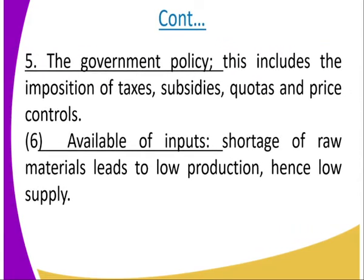Number five is government policy. This includes the imposition of taxes, subsidies, quotas, and price controls. When taxes are imposed on a commodity, it results in pricing being high, thus reducing the quantity taken to the market. Subsidies occur when the government subsidizes a commodity — the supply is going to be high since the government contributes to the cost of that product. Quotas are the limit given on a certain commodity that is supposed to be taken to the market. Price controls are a situation where prices are being controlled by the government.